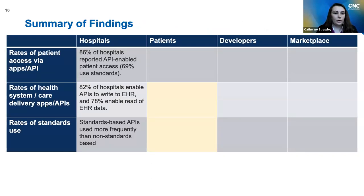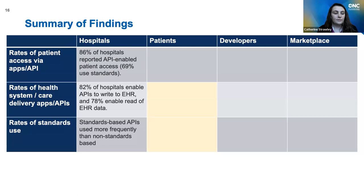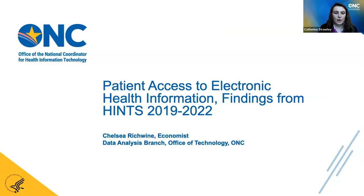To summarize the main findings: 86% of hospitals reported the enablement of patient access to data, and 69% of hospitals use standards-based APIs specifically for that purpose. 82% of hospitals enabled APIs to write to the EHR, and 78% enable read of EHR data. Really across the board with those functionalities, standards-based APIs are used most frequently. I'll pass it off to Chelsea.